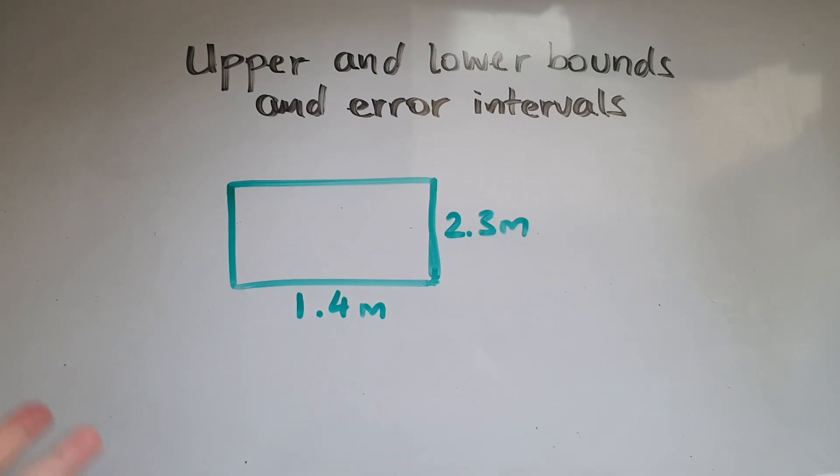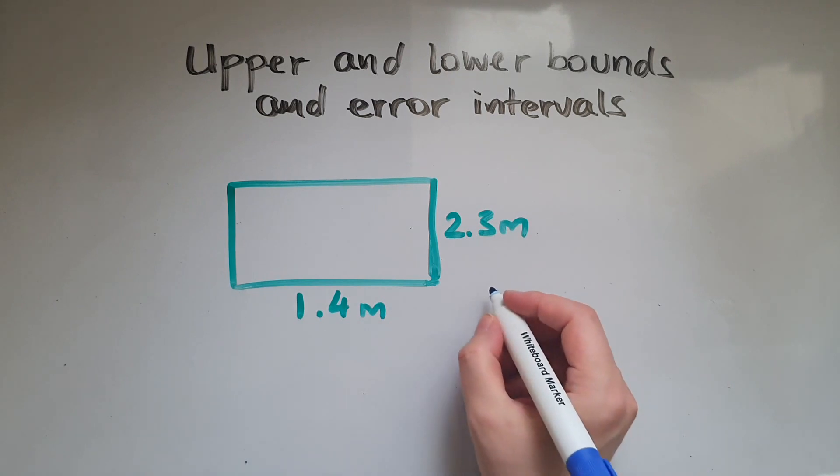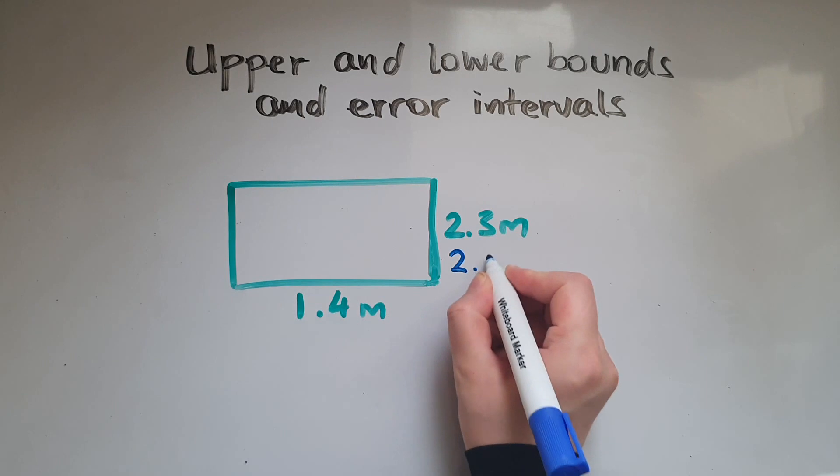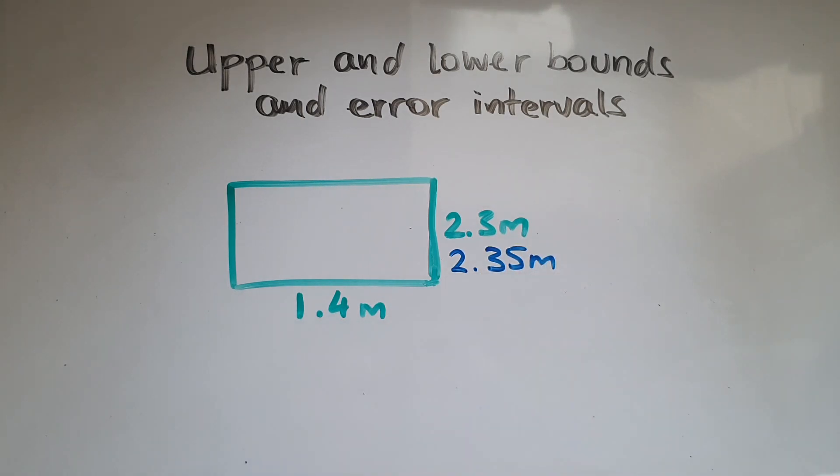So to find the area, we multiply length by width. So the higher the dimensions, the higher the value of the area, the greater the area. So we're going to look at the upper bounds of both of them. The upper bound of this number, which is rounded to one decimal place, is going to be 2.35 meters. And the upper bound of 1.4 is going to be 1.45 meters.